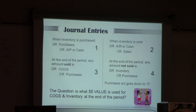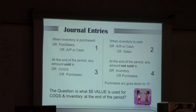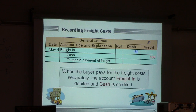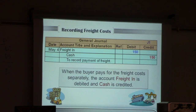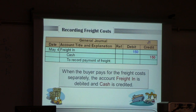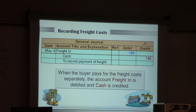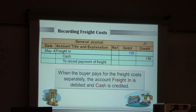The question becomes: what numbers do we use — what value for COGS and inventory at the end of the period? We'll talk about that in the next half of the chapter. Regarding freight costs: if the buyer is paying for shipping, freight in is a type of expense — you can also call it shipping expense. You debit it as an expense and credit Cash because you're paying for it.